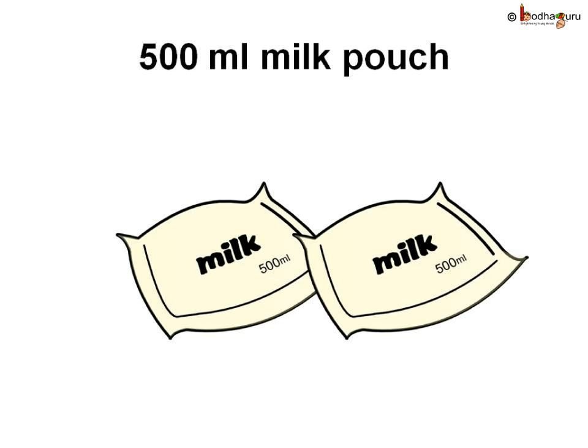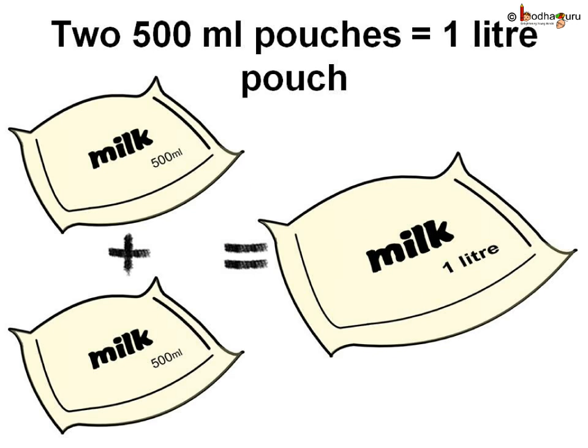When we buy pasteurized milk which comes in pouches, sometimes instead of a 1 litre pouch, you get 2 pouches, and if you read what is written on the pouch, it will say 500 ml each. This means 2 pouches of 500 ml are equal to 1 litre. A litre is divided into 1000 equal parts, and each small part is called a millilitre, the short form of which is ml.